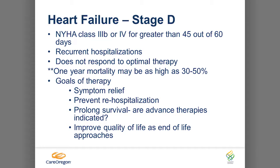Stage D: New York Heart class 3B or 4 for greater than 45 out of 60 days, recurrent hospitalizations, they start not responding. Their mortality rate is like 30 to 50% for one year. Goals of therapy: symptom relief, prevent rehospitalization, prevent mortality, and improve quality of life. This is where those conversations are really important.